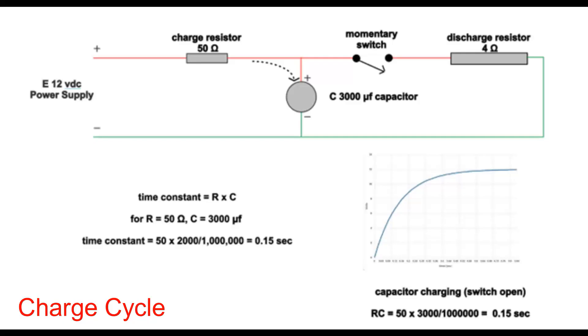If you go to 3 times that, 3 times 0.15 seconds, or 0.45 seconds, it charges up to 95%. And once you get to 6 RC time constants, it goes to 99.8%. So it never quite reaches the final value of 12 volts, but it approaches that exponentially.